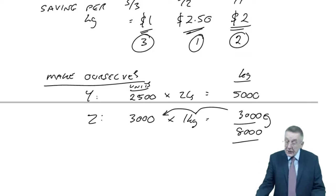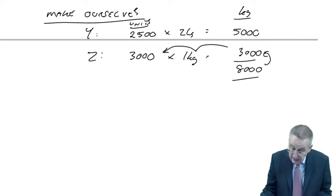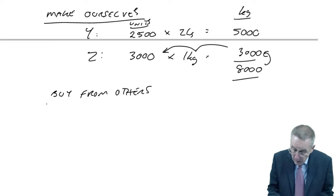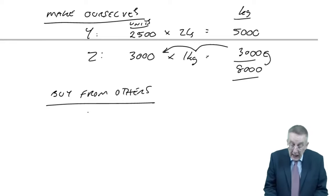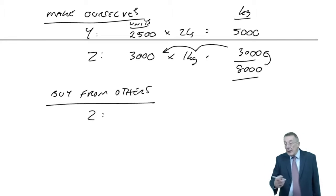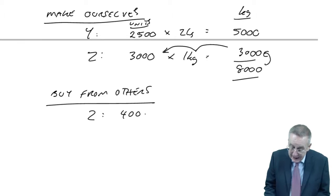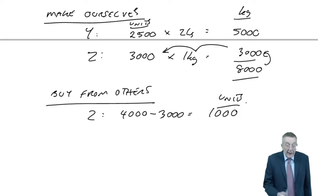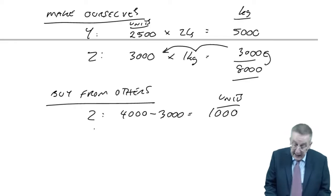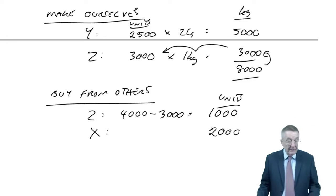Anything else we'll buy in. We're not going to buy any more Ys because we're already producing as many as we can sell. Z, we could sell 4,000 and we're only producing ourselves 3,000, so we'd have to buy in the other 1,000 units. And finally, X. We're not making any Xs ourselves, so we'd have to buy in all 2,000 units of X. And there we are. That's the best way of dealing with it.